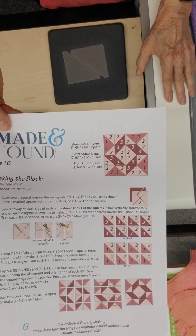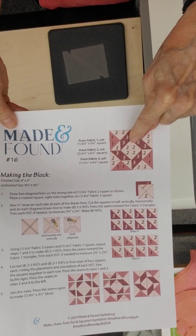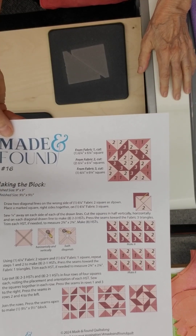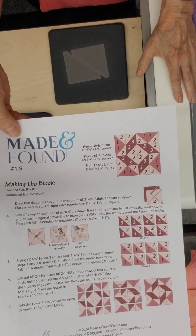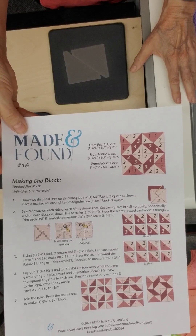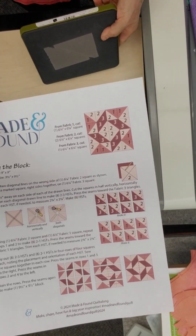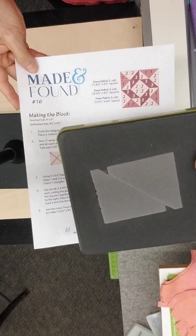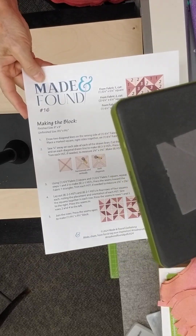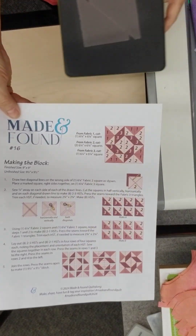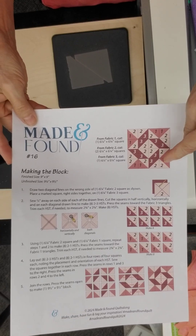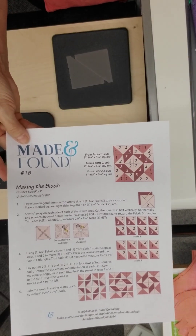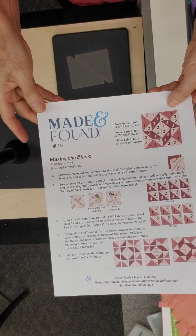So these are all half square triangles. Even though you see a trapezoid and a square on point, that's because of the use of color, but every single unit on this block is a half square triangle. That half square triangle is in your 9-inch cube and it is shape number five. It creates a two-and-a-quarter inch finished half square triangle unit when sewn. Two and a quarter times four equals nine inches—that's how the math works. So let's get cutting.